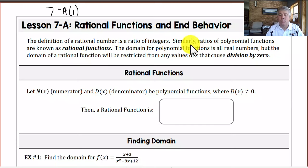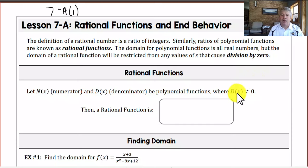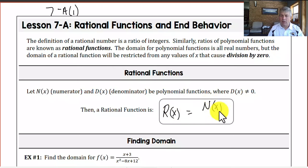A rational function is similar to a polynomial function except it's a ratio of two polynomial functions. The domain for polynomial functions is all real numbers, but the domain for a rational function is going to be restricted by any values of x that cause division by zero. So our rational function r(x) equals the numerator over the denominator — it's a fraction.